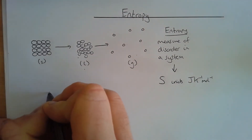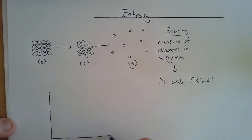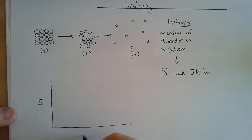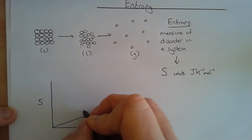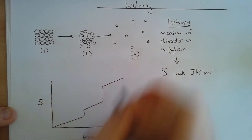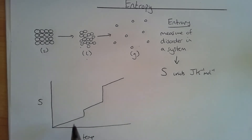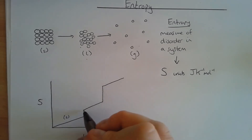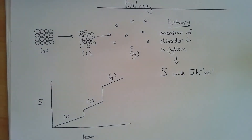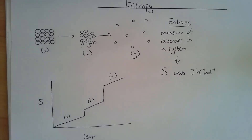Let's look at what happens when we plot entropy against temperature on a graph. At one point on the graph the substance is a solid, at another point a liquid, and at another point it's a gas. What we see is that as temperature increases, entropy increases.